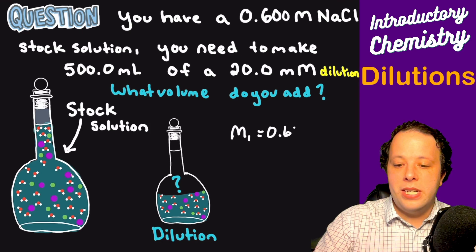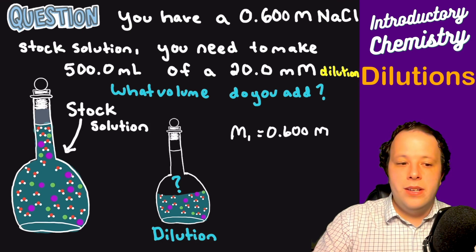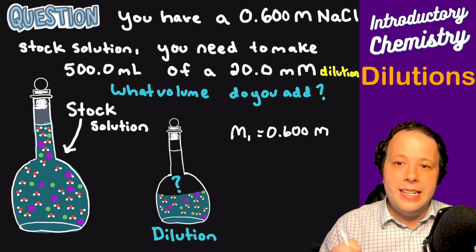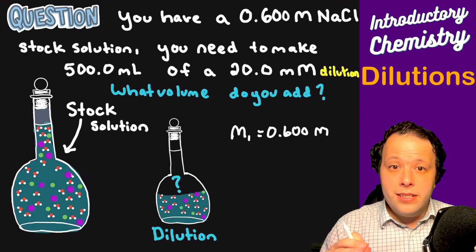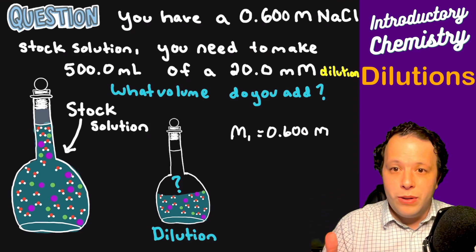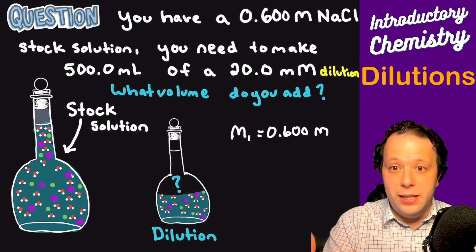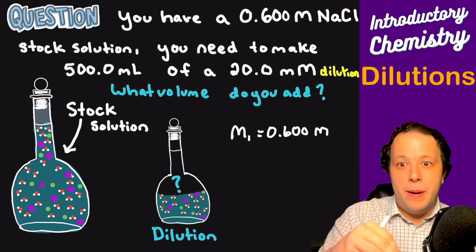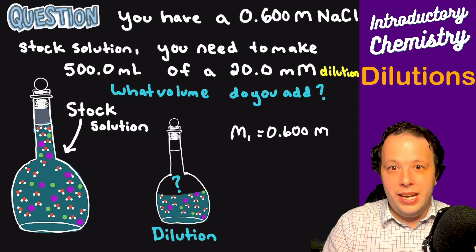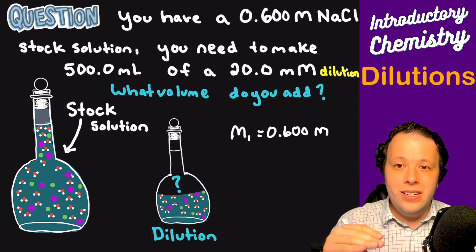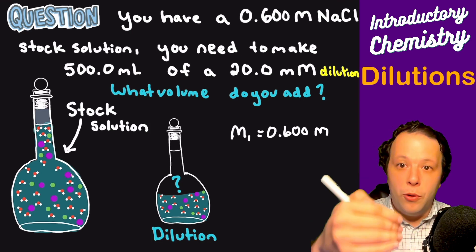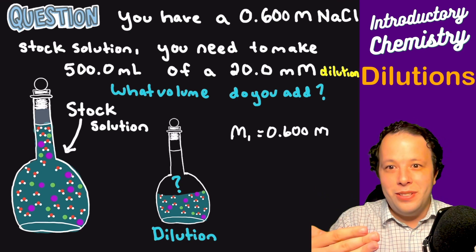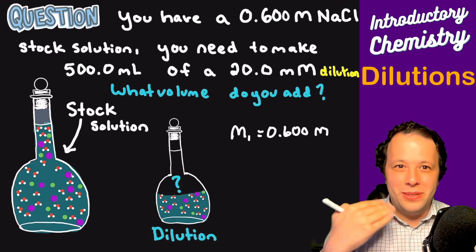This is referred to as a stock solution. What does that mean? A stock solution refers to the most concentrated solution that you have available, meaning what's available in the stock room or the prep room. It's what you have on hand. If it's your stock solution, you can't go any more concentrated than that. You can only go down. You can dilute. You can't go upwards. Remember that for later.